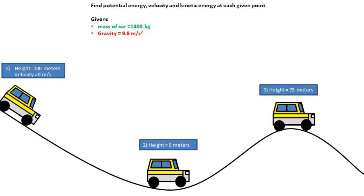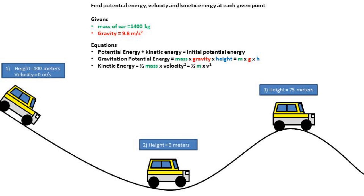The three equations we'll be using are potential energy plus kinetic energy equals initial potential energy, potential energy equals mass times gravity times height, and kinetic energy equals one-half mass times velocity squared.